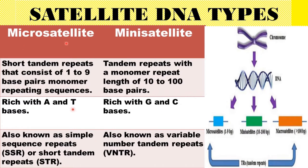Microsatellite is also known as simple sequence repeat — that is why we call it an SSR marker. Using these simple sequence repeats, it could also be called a short tandem repeat. Microsatellite can also be called SSR or STR, that is simple sequence repeat or short tandem repeat, whereas minisatellite is known as variable number tandem repeats, or VNTR.